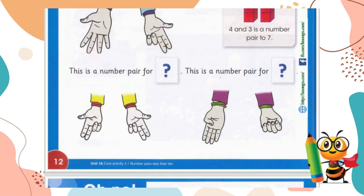Moving on to the next one — this is a number pair for six. We count: one, two, three — and one, two, three. We have three fingers here and three fingers here. So this is a pair of three and three. Counting collectively: one, two, three, four, five, six. This is a number pair for six, and the numbers that make it are three and three.